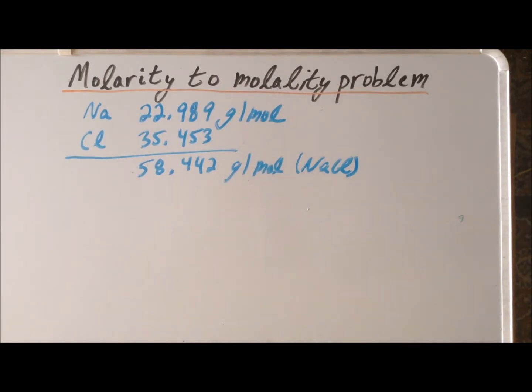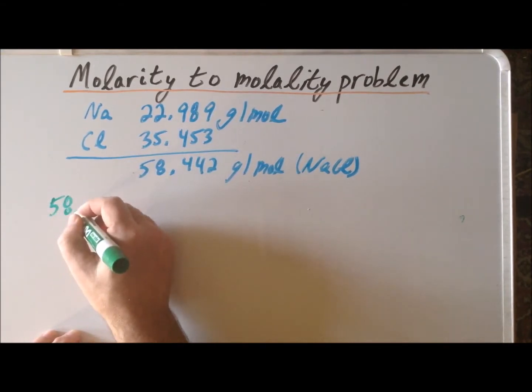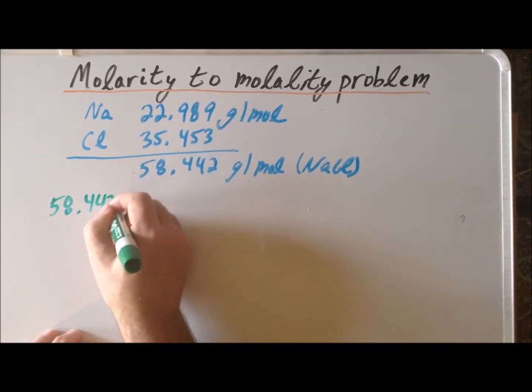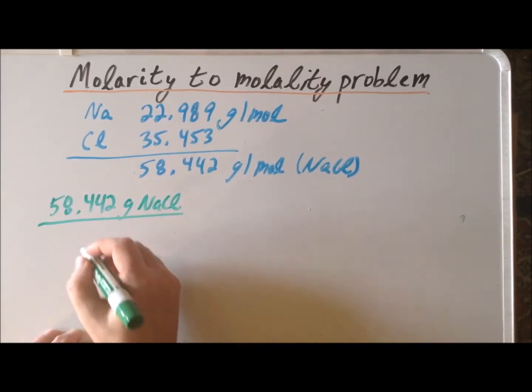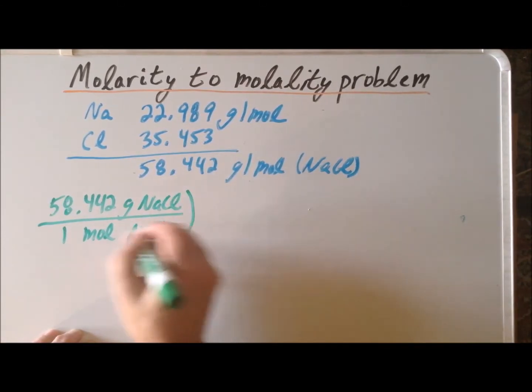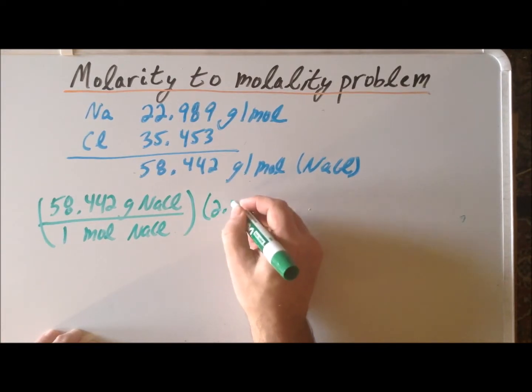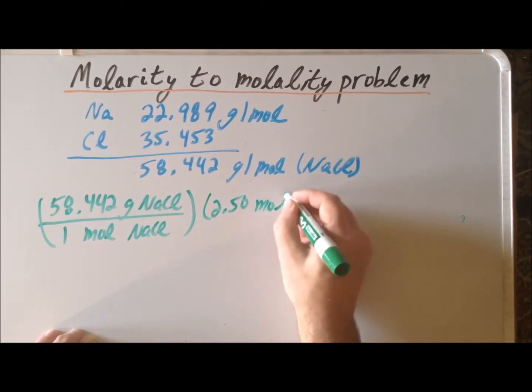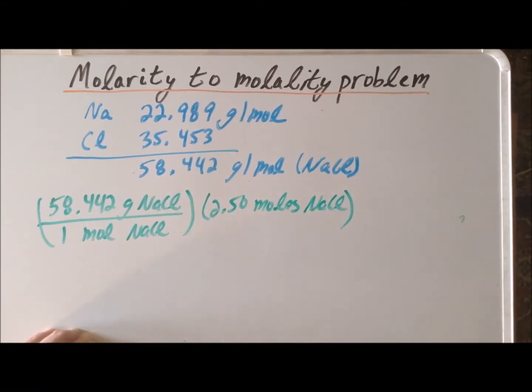Now we can use the results of our previous two steps to find the mass of sodium chloride in the solution. We found that the molar mass is 58.442 grams of sodium chloride per mole, and we also found that we had exactly 2.50 moles of sodium chloride.